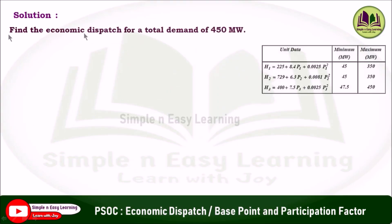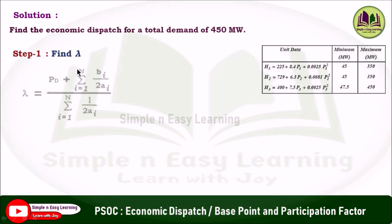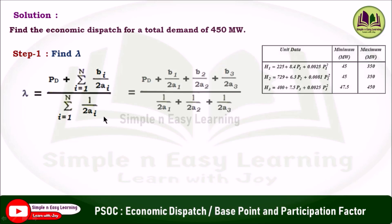Solution — Part 1: Find the economic dispatch for a total demand of 450 megawatt. Step 1: Find lambda using the formula: P_d plus summation (i=1 to n) of b_i / 2a_i, divided by summation (i=1 to n) of 1 / 2a_i. Substituting n = 3, the formula becomes P_d plus b1/2a1 plus b2/2a2 plus b3/2a3, divided by 1/2a1 plus 1/2a2 plus 1/2a3.